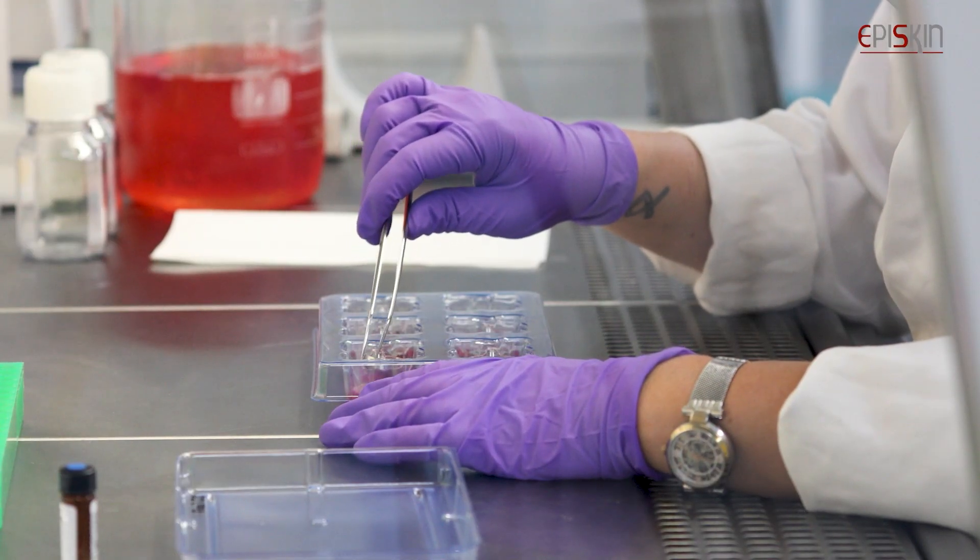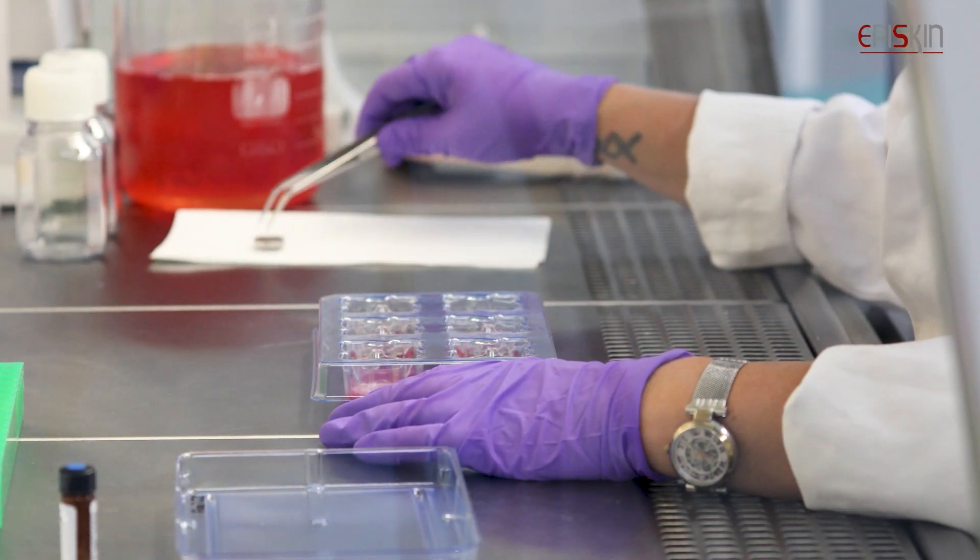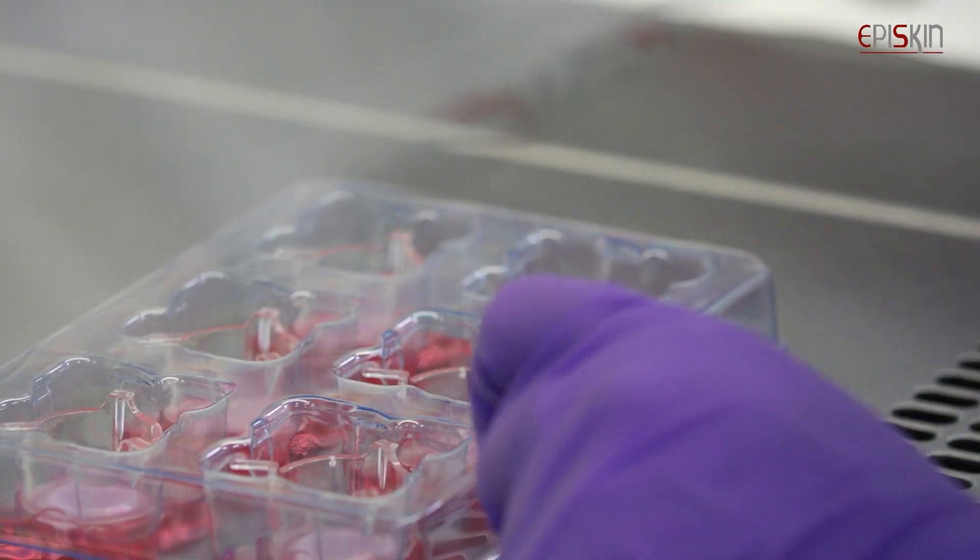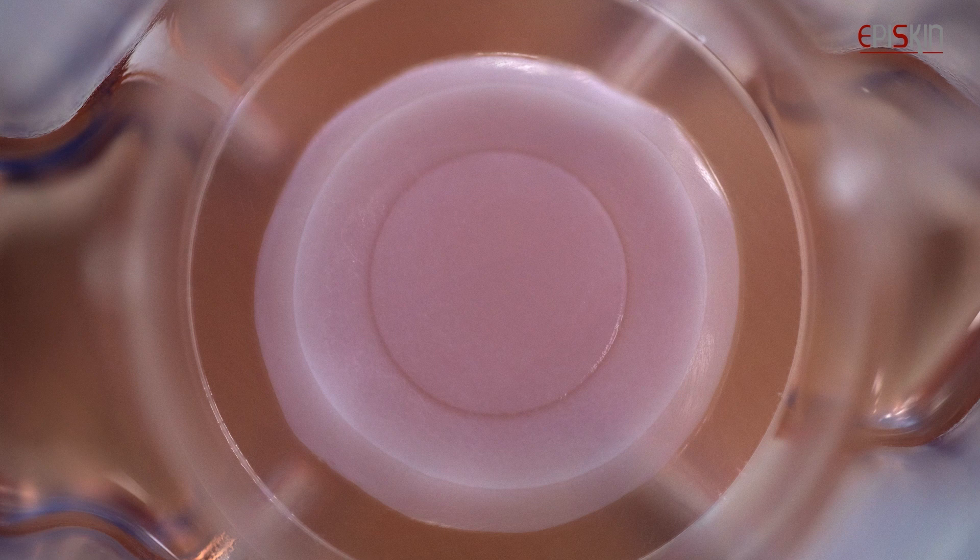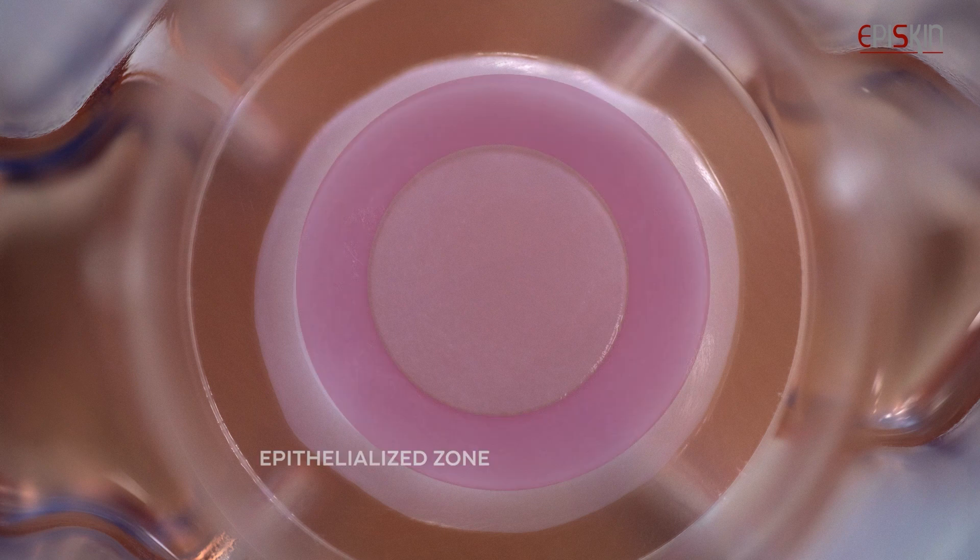During the production step, the keratinocytes are seeded on the outer part of a stopper ring. After six days of culture, rings are removed. This leads to a non-epithelialized zone in the inner part of the model.